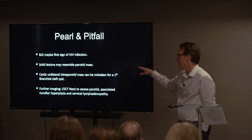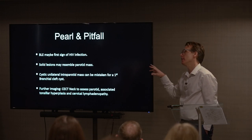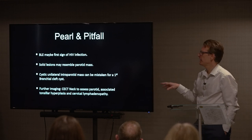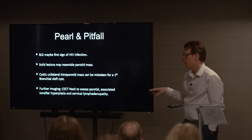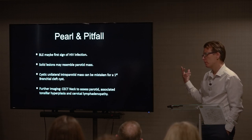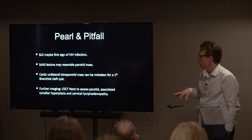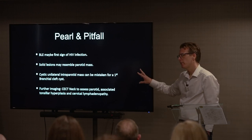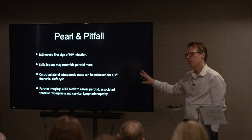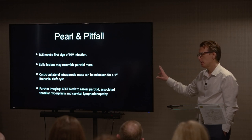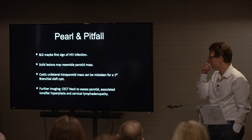Pearls and pitfalls: if a rather large cystic component is present, consider first branchial cleft cyst as a differential — something we'd think about when writing our reports. If we're thinking HIV-related, we could do follow-up CT or MR imaging, looking at the tonsils and lymphadenopathy in the neck to make a fuller assessment.